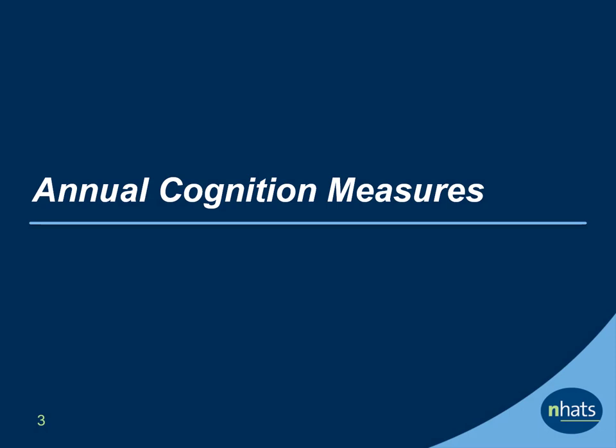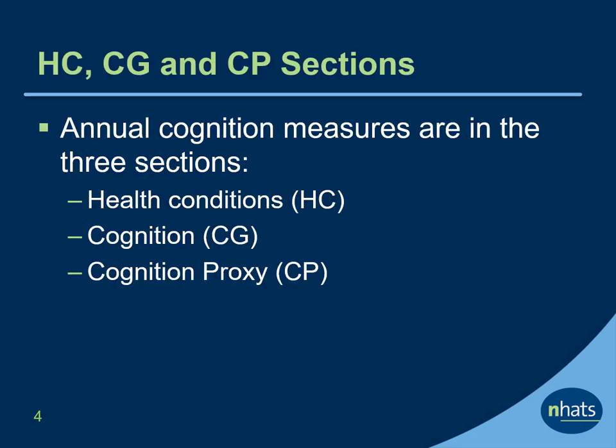Let's start with NHATS annual cognition measures. The annual cognition measures appear in three sections within the NHATS SP interview: the Health Condition section, or HC; the Cognition section, or CG; and the Proxy Cognition section, or CP. Let's take a look at who completes each of these sections.